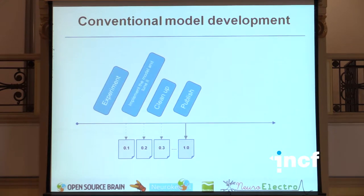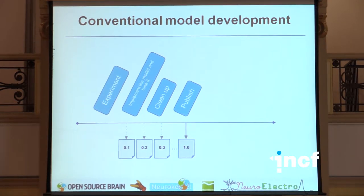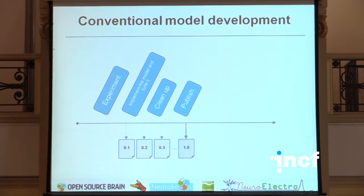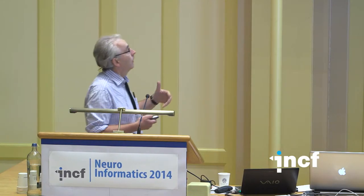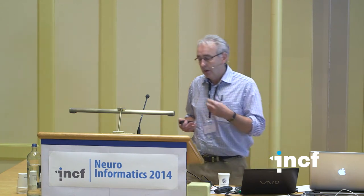Traditionally, this model development has proceeded in a rather linear fashion, where you'd have a new PhD student or a postdoc in your lab who may use existing data or generate experimental data themselves, and then start to build a model to fit that data. This whole process may take one or two years, depending on their ability and the difficulty of the problem, for building, for example, a single-cell model. This approach doesn't scale very well, because often once the PhD student's finished, the code may be released on a database like ModelDB but is frozen and may not be reused. If we really want to build a modular approach to modelling the brain, we need a better system for reuse of model components and really building on what people have done before.